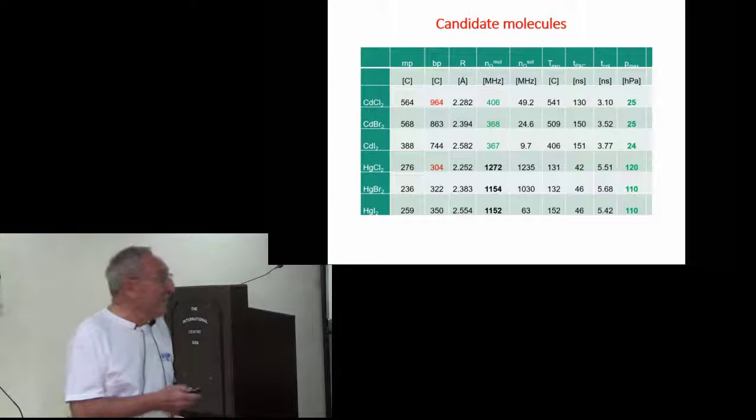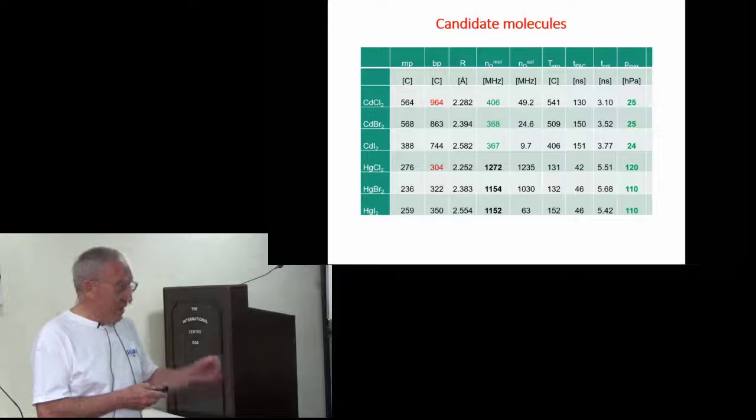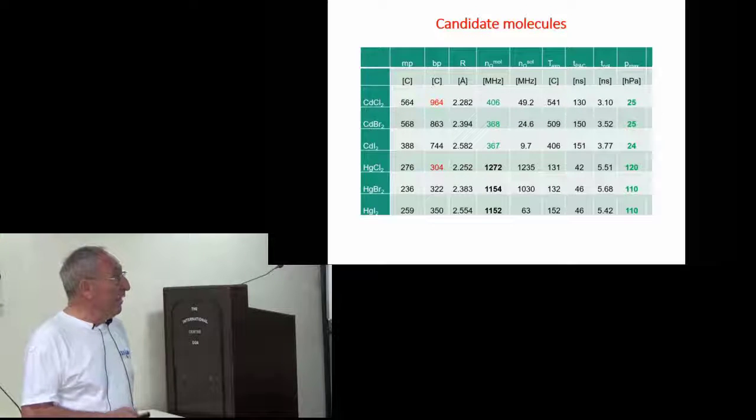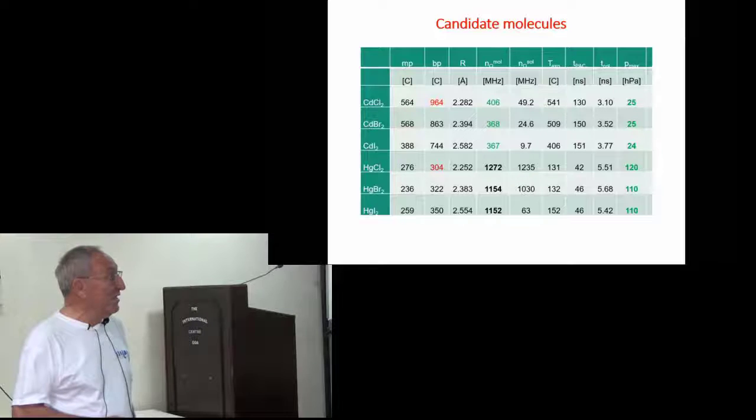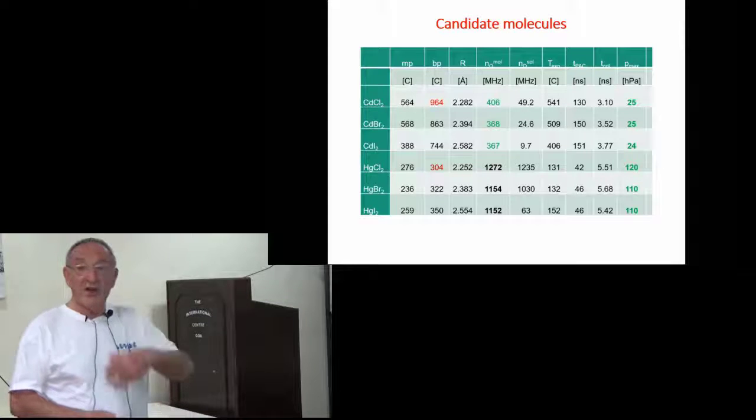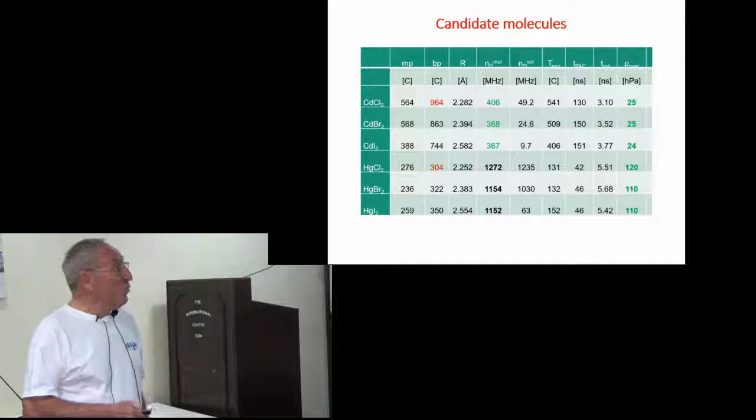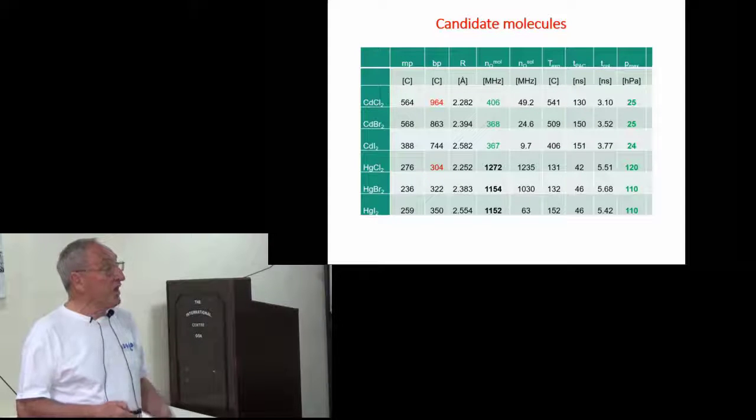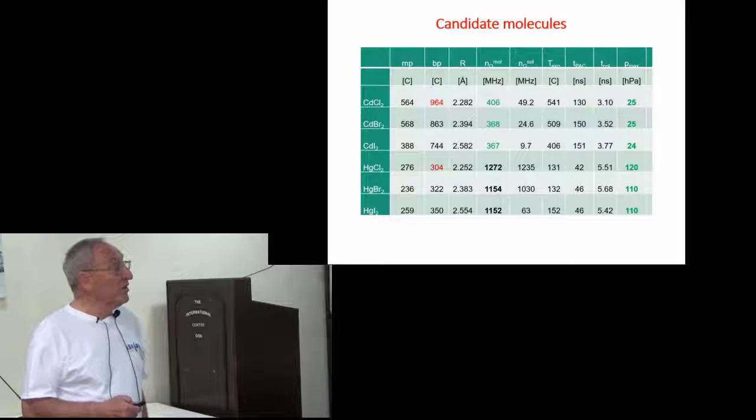So where are our candidates? Our candidates are very simple triatomic molecules: cadmium halides and mercury halides. The mercury halides have boiling points rather low, they're very volatile. The cadmium ones are fairly high, but at the time we thought that was not a real problem.